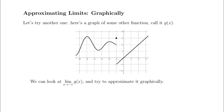We've got another function called g of x — it looks a little more complicated. We're going to figure out the limit as x approaches negative 1 graphically. We can draw some arrows, and we're really looking at getting close to the x value of negative 1. We follow our graph from the left and see what the y values are doing, then follow our graph on the right. This picture can be a little clunky, and we notice we don't care about the function value at negative 1 — g of negative 1 equals 3, but that has nothing to do with the limit.